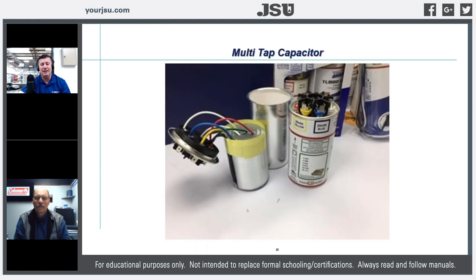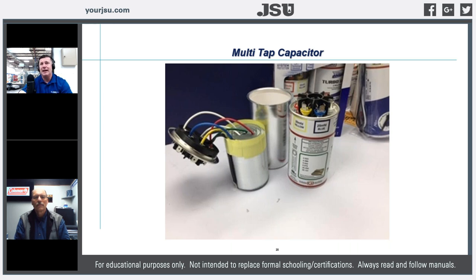This brings us to universal capacitors and some that we stock at Johnstone. When we cut that capacitor open and understand the construction — about a thousand feet of film in that can — think about that from a quality perspective. It all comes back to quality and construction when we're comparing different manufacturers of capacitors.